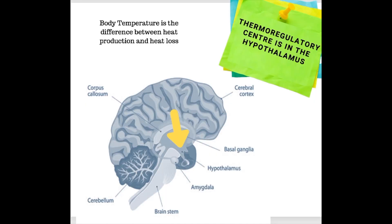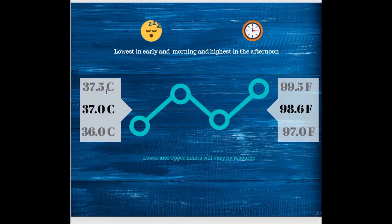This is all controlled by the thermoregulatory center, located in the hypothalamus. Body temperature is really just the difference between the heat our body is producing — whether through cellular activity, exercise, or being wrapped in blankets and heating tools — and the heat we lose through respiration and other activities. Maybe you're holding a cold drink, and essentially what we have is this range where we normally like to sit and where we are comfortable.